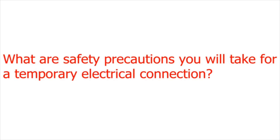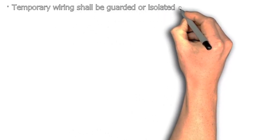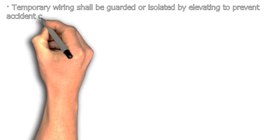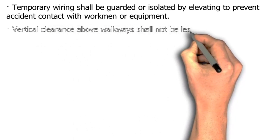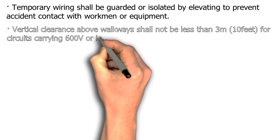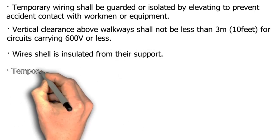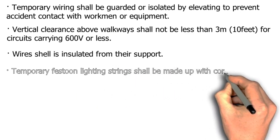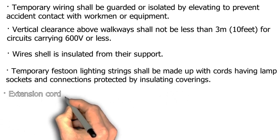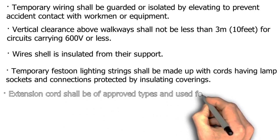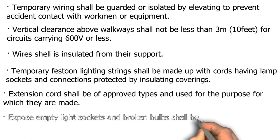Safety precautions for temporary electrical connections: Temporary wiring shall be guarded or isolated by elevating to prevent accidental contact with workmen or equipment. Vertical clearance above walkways shall not be less than 3 meters for circuits carrying 600 volts or less. Wires shall be insulated from their supports. Temporary festoon lighting strings shall be made with cords having lamp sockets and connections protected by insulating coverings. Extension cords shall be of approved types and used for the purpose for which they are made. Exposed empty light sockets and broken bulbs shall be prohibited.